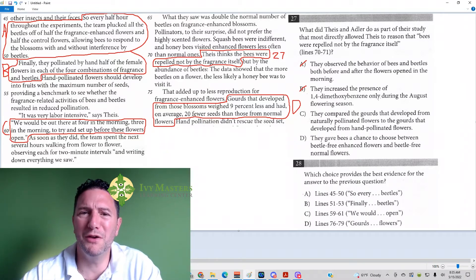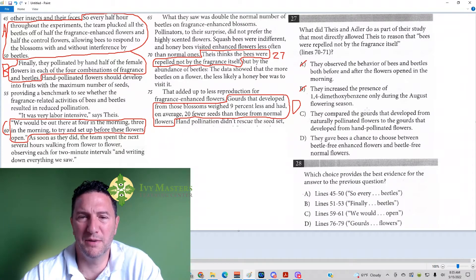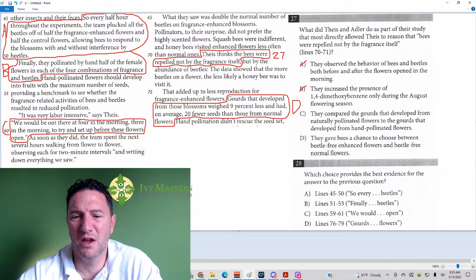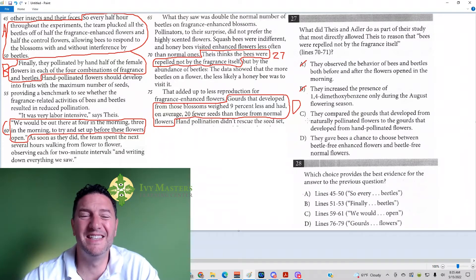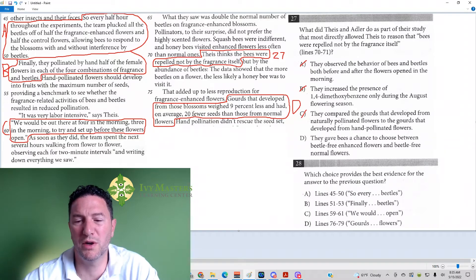Well, it could be if they're attracted to them one season and not another, but that doesn't have to do with the experiment. That doesn't have to do with this answer here. Answer choice C: they compared the gourds that developed from naturally pollinated flowers to the gourds that developed from hand pollinated flowers. They did, but that has to do with how the flowers developed, not whether or not the bees were repelled or attracted by the flowers.